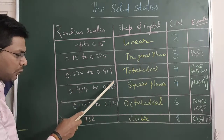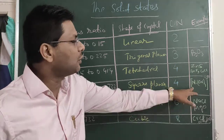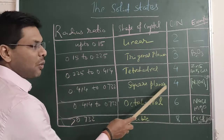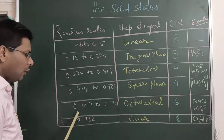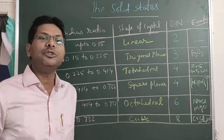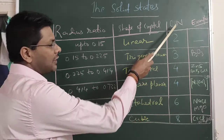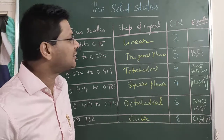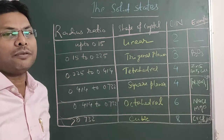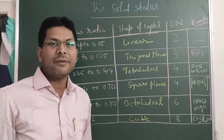From 0.414 to 0.732, there are two cases. First is square planar with coordination number 4; an example is tetracyanonickelate(2-), which is a coordination compound. Second is octahedral with coordination number 6; examples are NaCl and MgO (magnesium oxide). If the radius ratio is greater than 0.732, the shape is cubic with coordination number 8; examples are cesium chloride, ammonium bromide, and cesium iodide. If you remember this table, you will be able to solve questions based on coordination number, shape, and limiting radius ratio.